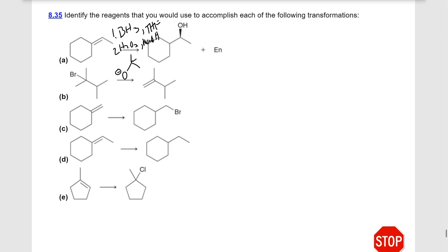In the next one, we're adding H and Br across an alkene in anti-Markovnikov fashion, where our Br goes to the less substituted side. That's our HBr in the presence of peroxide. Next, we've just added two hydrogens across our double bond, so this is our hydrogenation reaction — just H2 in the presence of a platinum catalyst. And in the next one, we've added H and Cl in Markovnikov fashion, so this is just HCl added across our double bond.